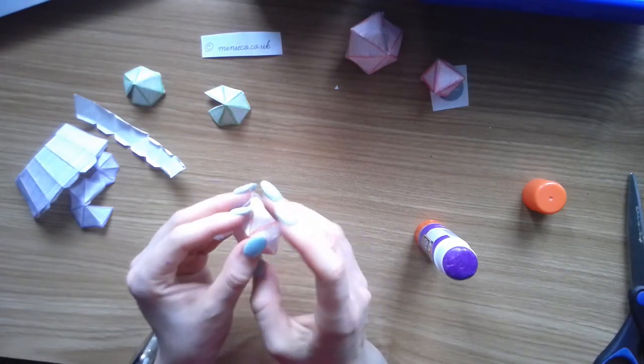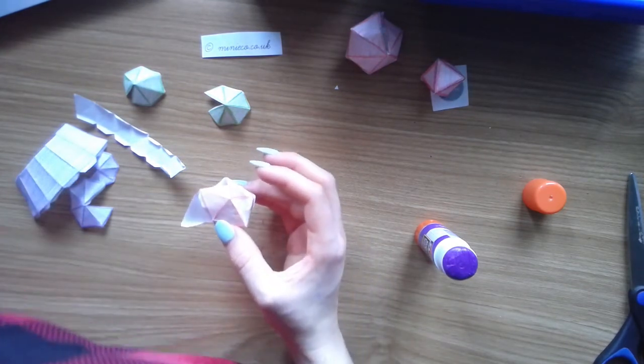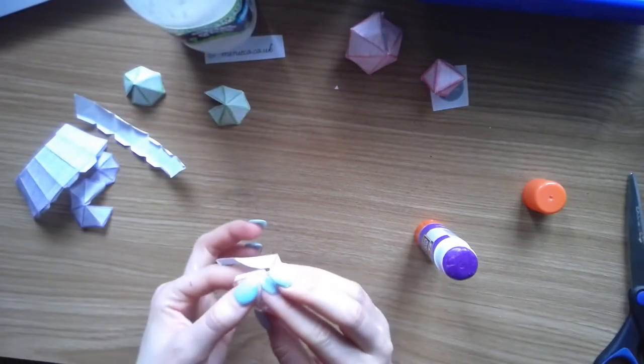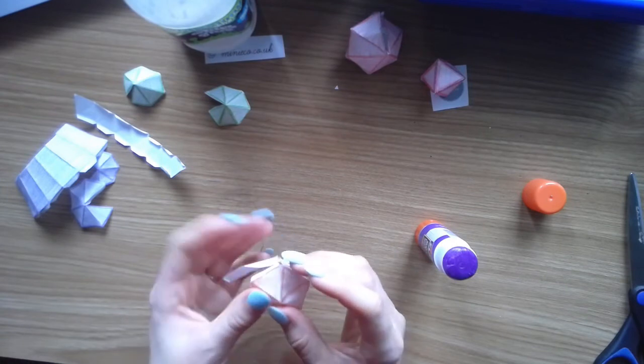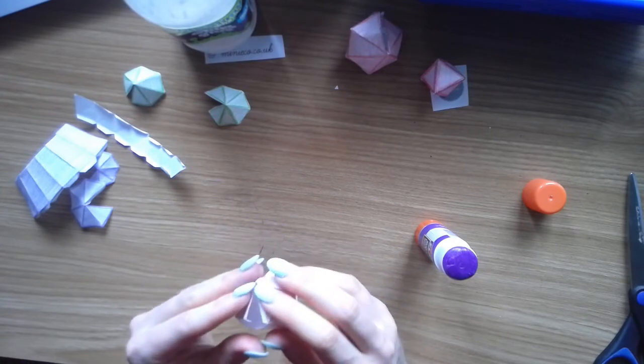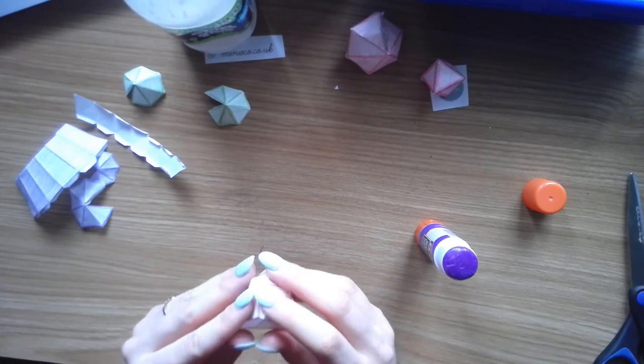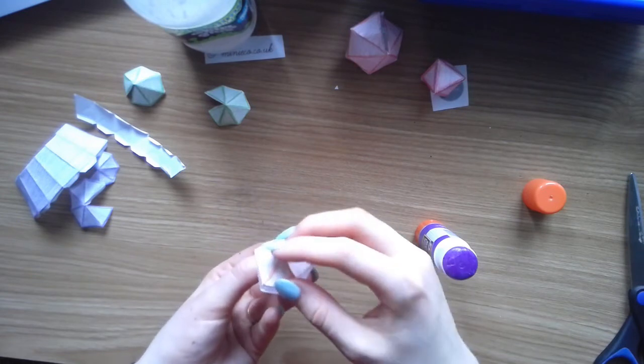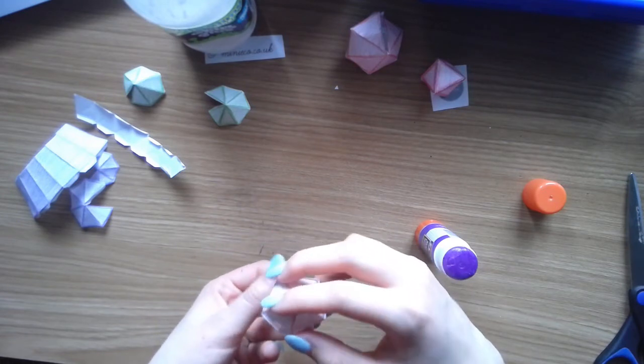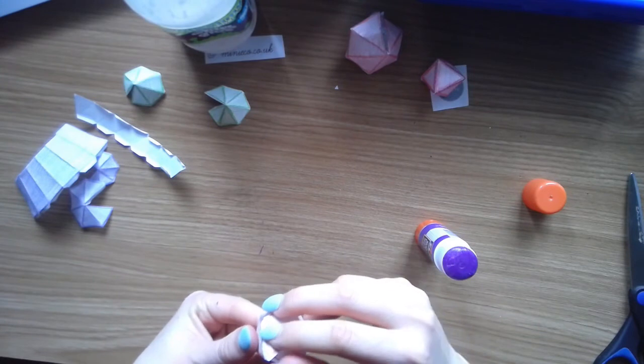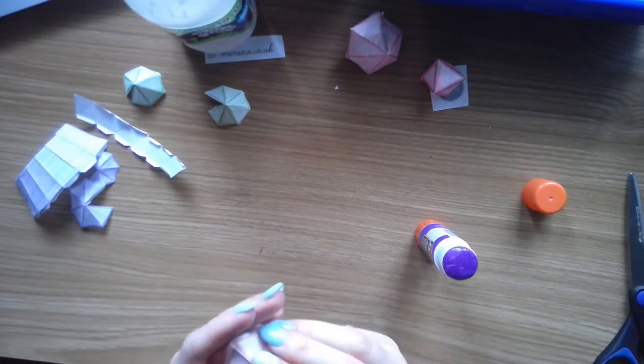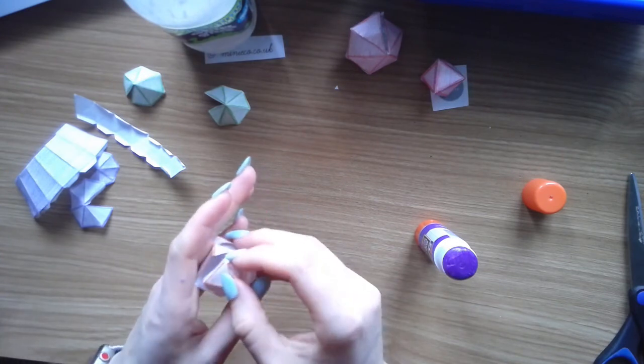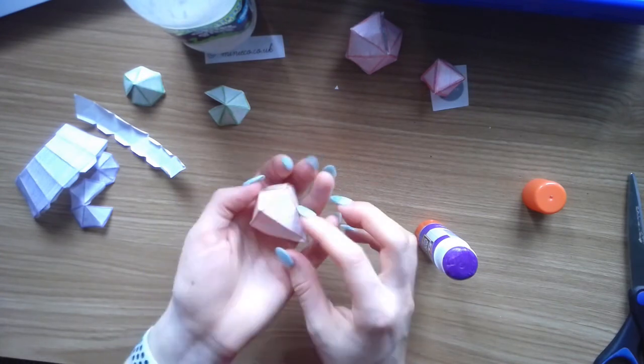It's probably a lot easier using white glue like this stuff, Elmer's, because you have more malleability with it and it stays longer. There we go. Close enough. It's not perfect, but we got it. There we go. Now we got the last one.